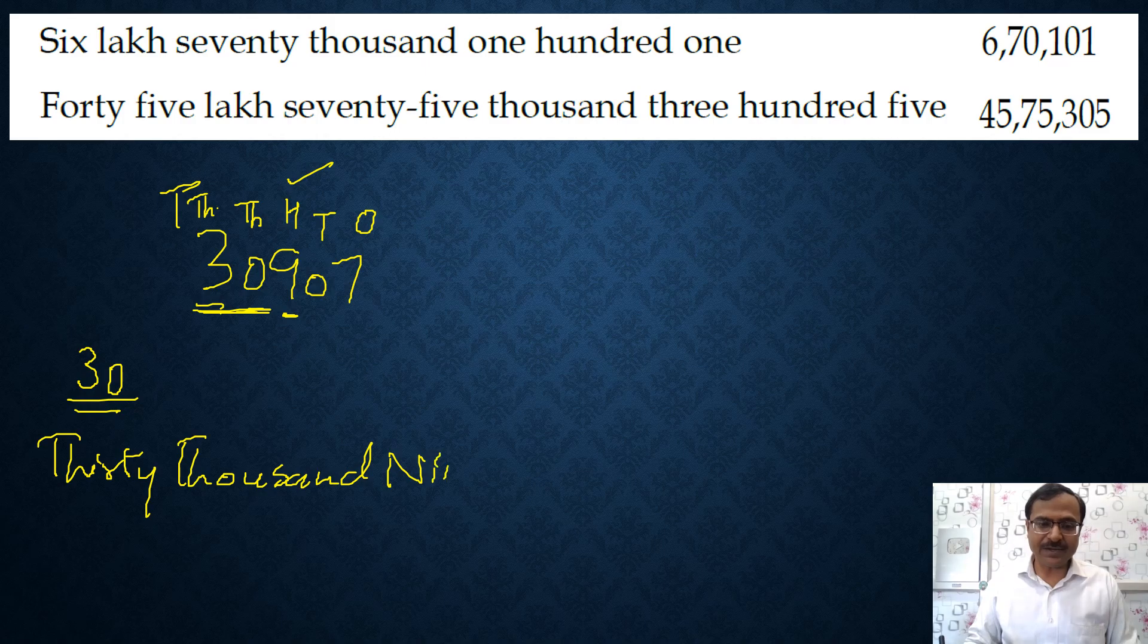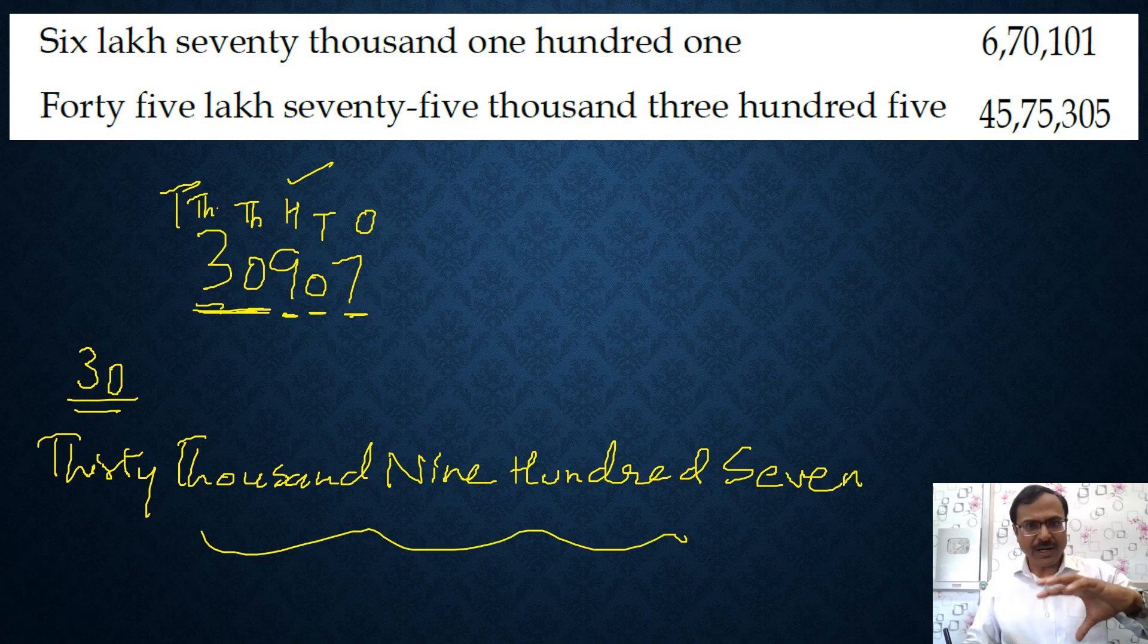If you expand this you will write it as thirty thousand, and then the next digit 9. Nine is in the hundreds place so you will write nine hundred. And finally zero tens, you don't need to write zero tens in the expanded form, and then seven. So that becomes the number name.